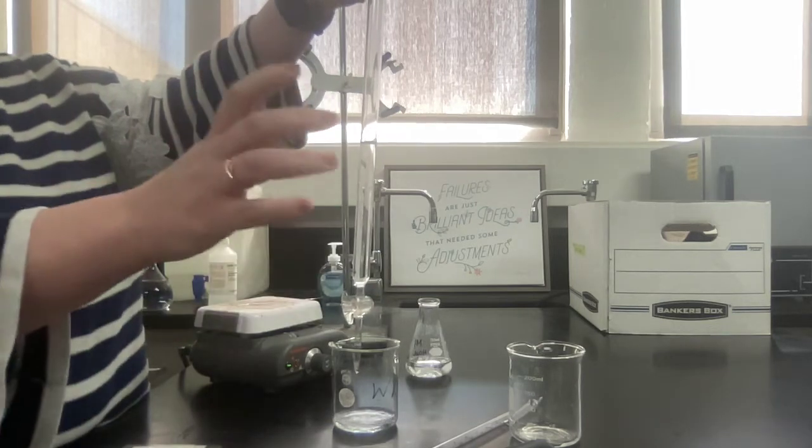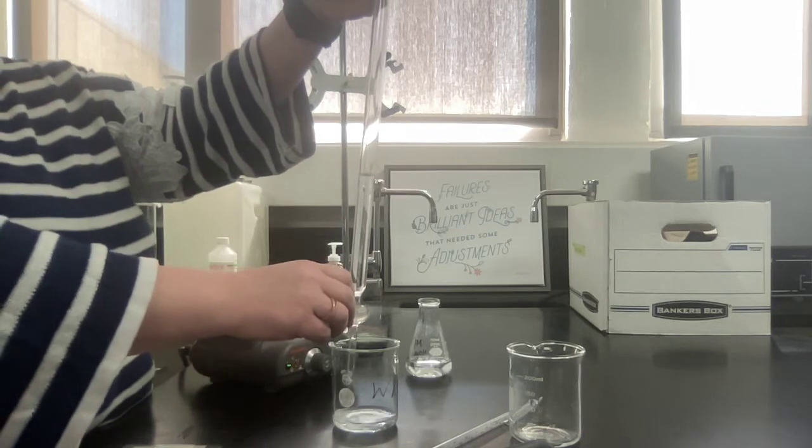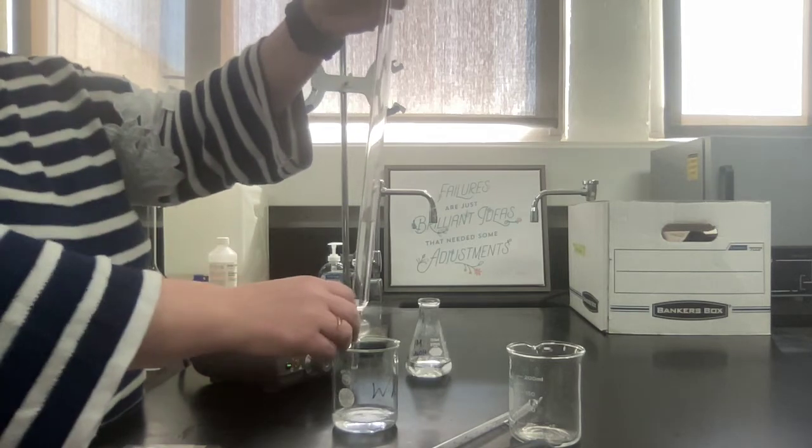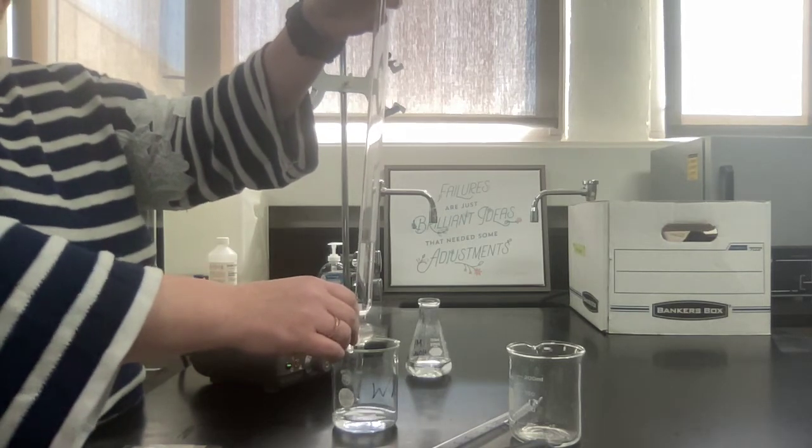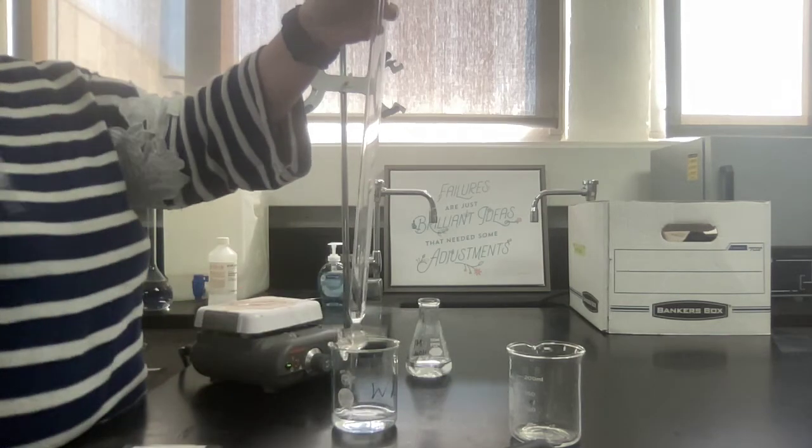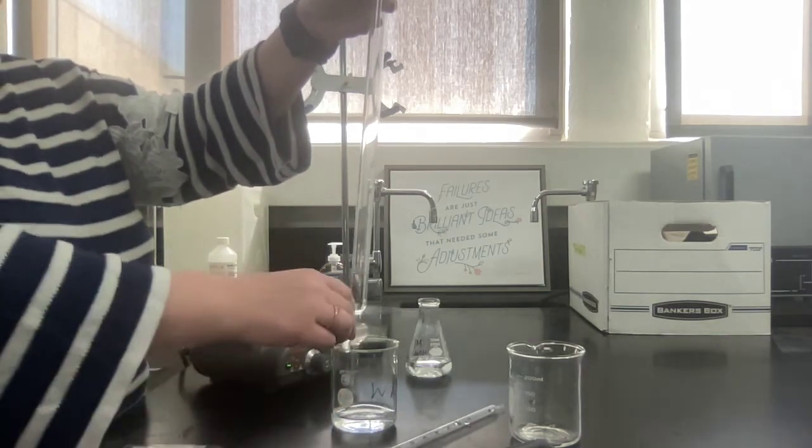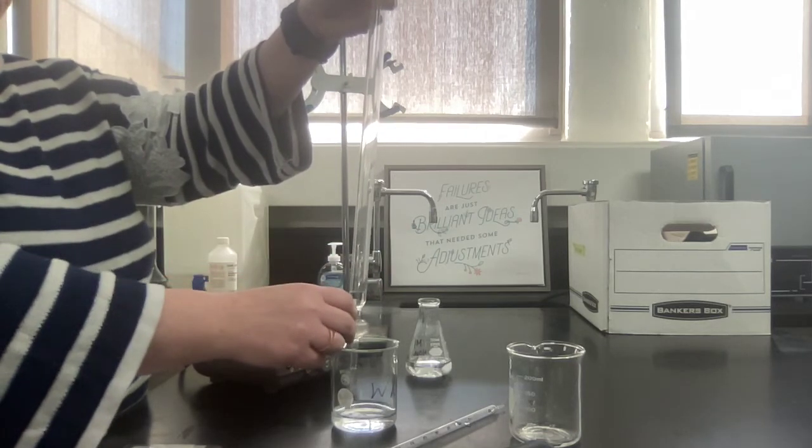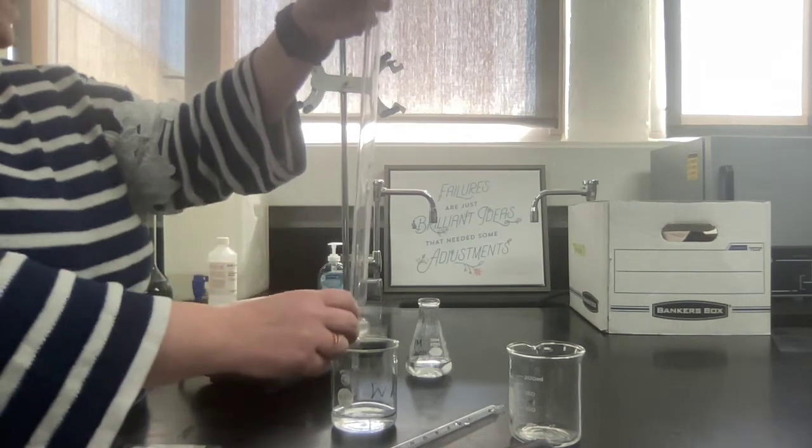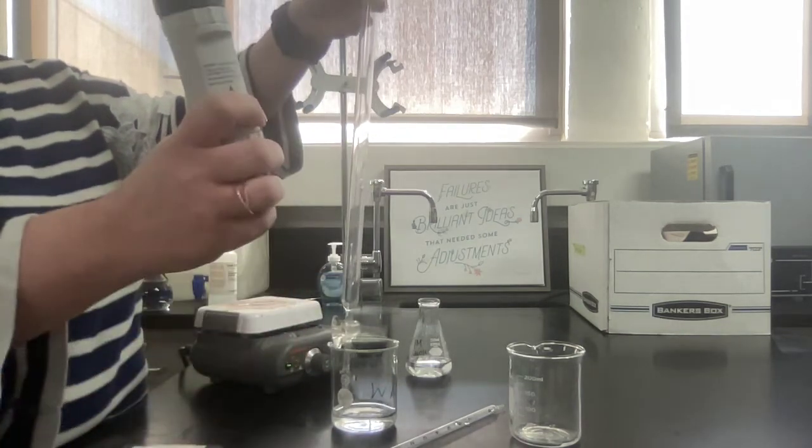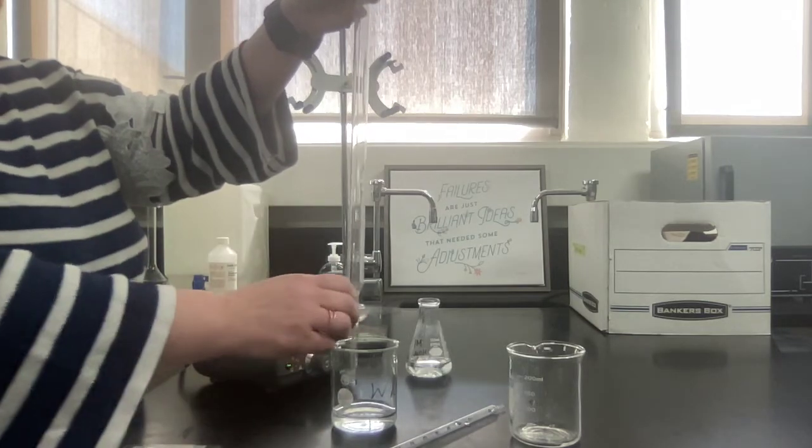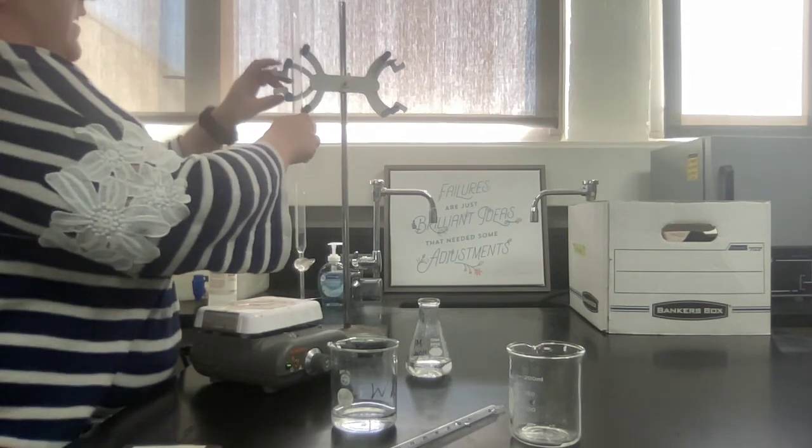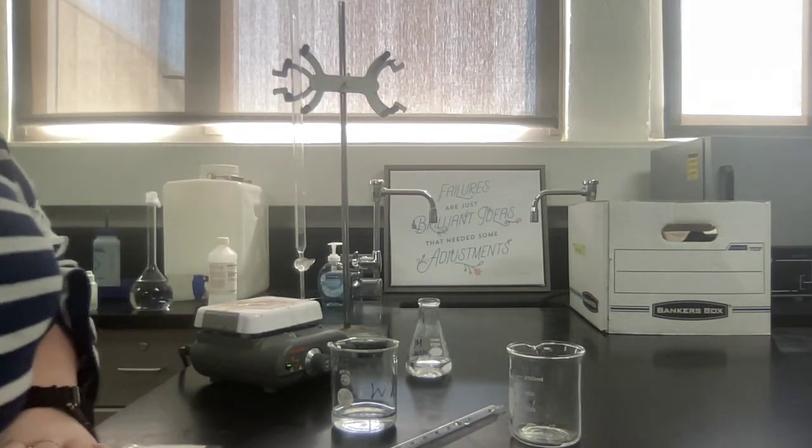You can then rinse out your buret. The sink over near the hood has a deep sink, so it's good for rinsing your burets, and put it upside down on the buret drying rack. Rinse out your pipette, put that on a drying rack. Rinse out your two beakers, put those on drying racks. Rinse out your flask and put that on a drying rack. On your tray, all you will need is the pipette holder and the stir bar, and everything else can go away.